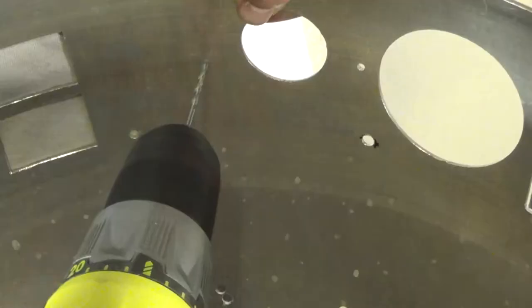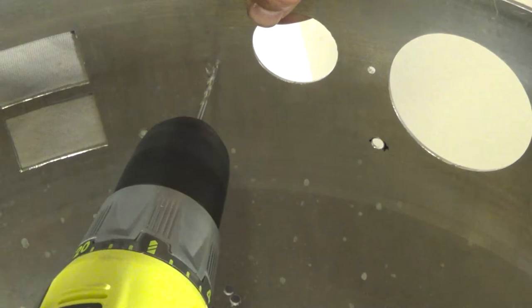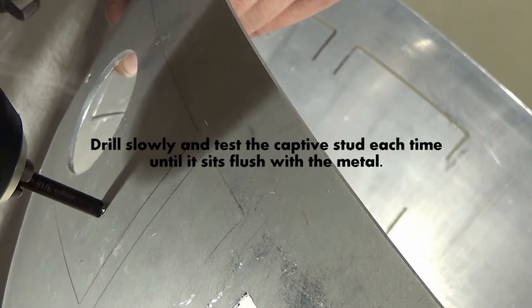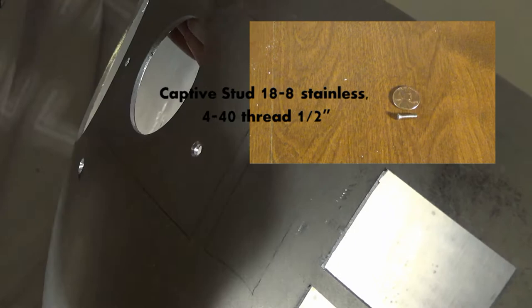Once you have both holes drilled, grab your countersink. It's a 3/16 inch countersink bit at 120 degrees. Don't worry about burrs on the outside. Stick it on the outside of the dome hole. Drill slowly. Grab your captive stud and we're going to place that in to see how it fits.